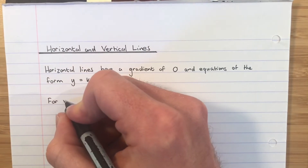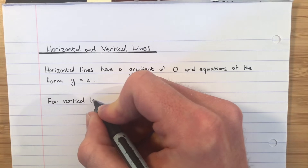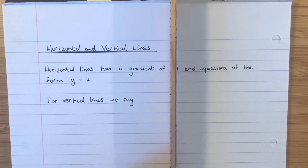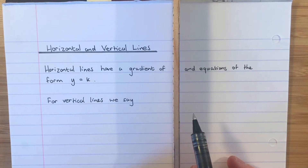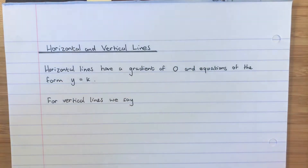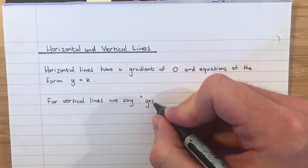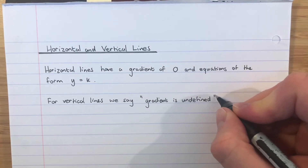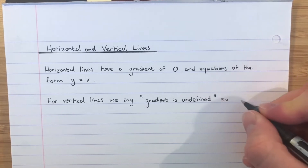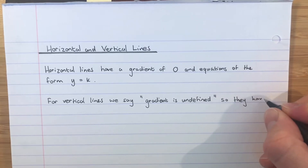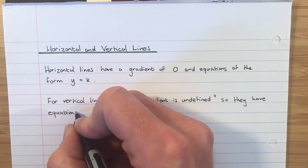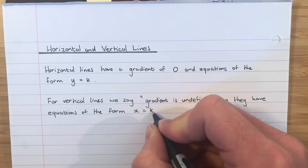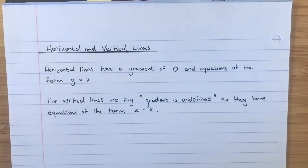For vertical lines, think about a line going straight up and down. If you consider the gradient — every time you go along one box, how many boxes do you go up — that's nonsensical because you can't go along one box. So for vertical lines, the gradient is undefined; it doesn't have a gradient. They have equations of the form x equals k, such as x equals 2, x equals 5, or x equals negative 3.